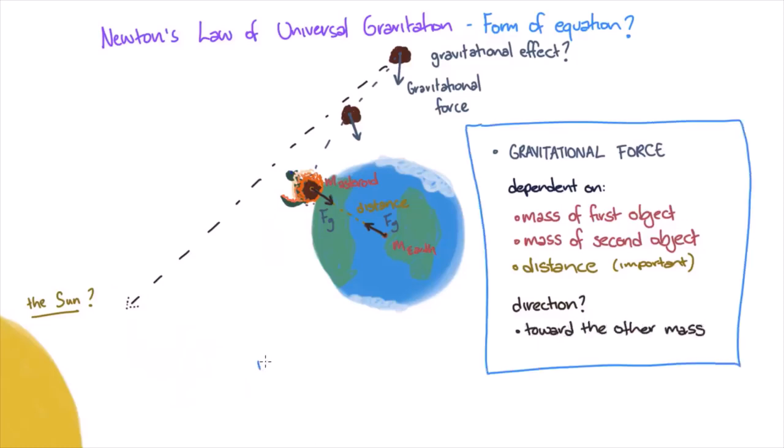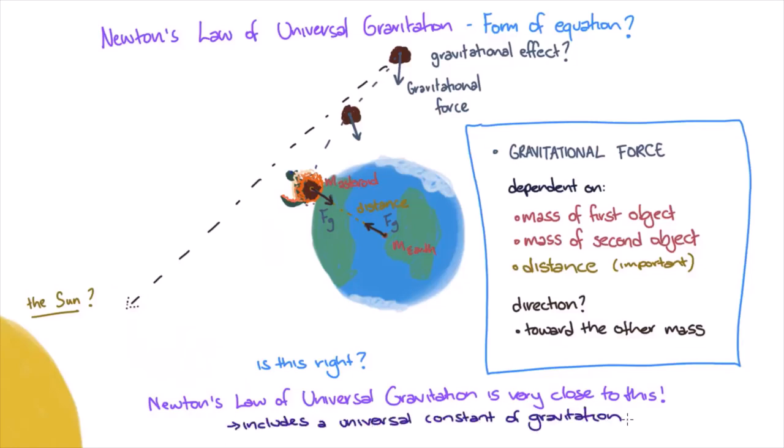So does the equation for Newton's law of universal gravitation actually match these predictions? As it turns out, it is pretty close. The gravitational force acting on two objects is equal to the mass of each of the objects multiplied together and divided by the square of the distance between the objects. But it is also multiplied by another constant, which is known as the universal constant of gravitation.